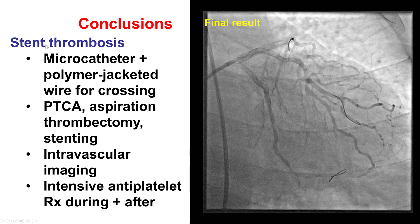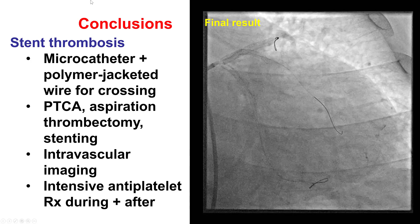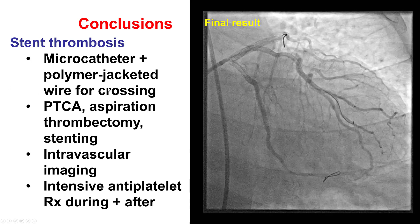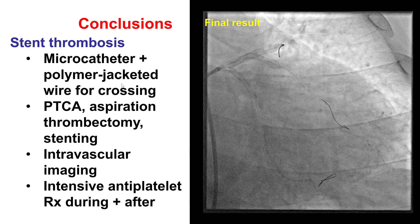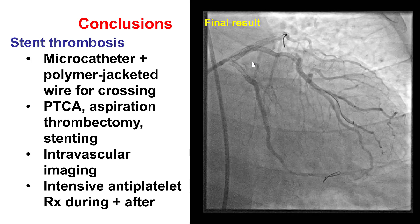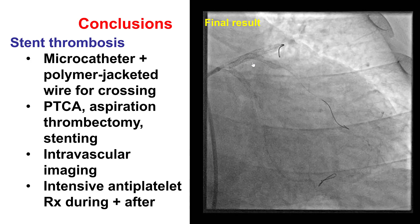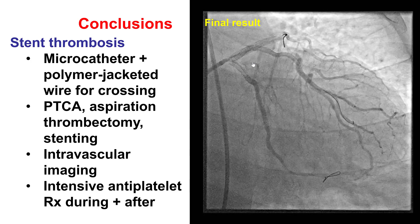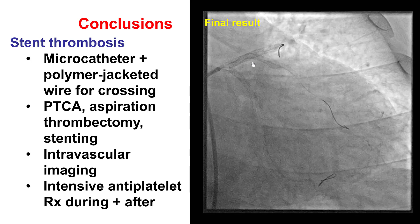Several lessons from this case: In stent thrombosis, it can be hard to advance a wire through the thrombosed stent. Using a microcatheter provides extra wire support and allows reshaping and exchange of the guidewire. A polymer-jacketed wire with a looped tip is advantageous to avoid going under stent struts. The approach is: wire first, then aspiration for large thrombus burden, or balloon angioplasty with a small balloon. Intravascular imaging is important to understand the cause of stent thrombosis. Finally, intensive antithrombotic and antiplatelet therapy is required — cangrelor or a 2B3A inhibitor, as well as potent oral P2Y12 inhibitors such as prasugrel and ticagrelor, continued indefinitely in many patients after this event.